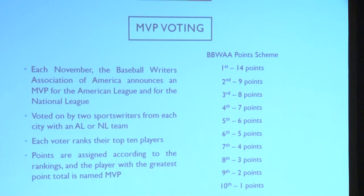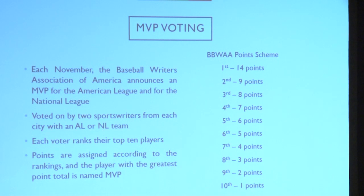The way it works is each voter gets a ballot and they get to rank their top ten players — any players are valid. After all the ballots are collected, they apply a point scheme. If you appear on a ballot in tenth place you get one point, ninth place you get two points, and so on. Whoever gets the most points is named MVP.